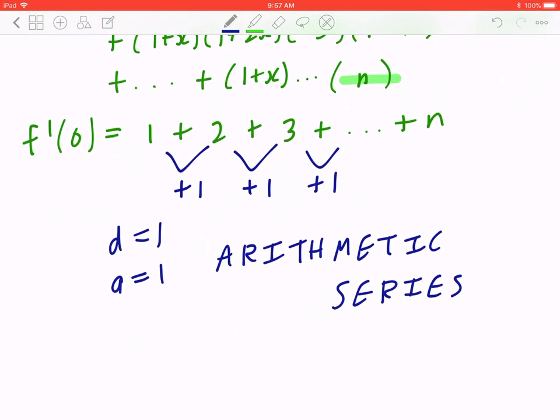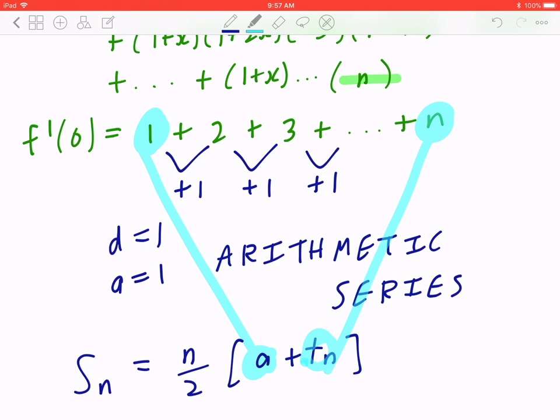Now, there are two formulas that you can use. One of them is Sn equal to n divided by 2 times A plus Tn. And of course, A means the first number, Tn is the last number.